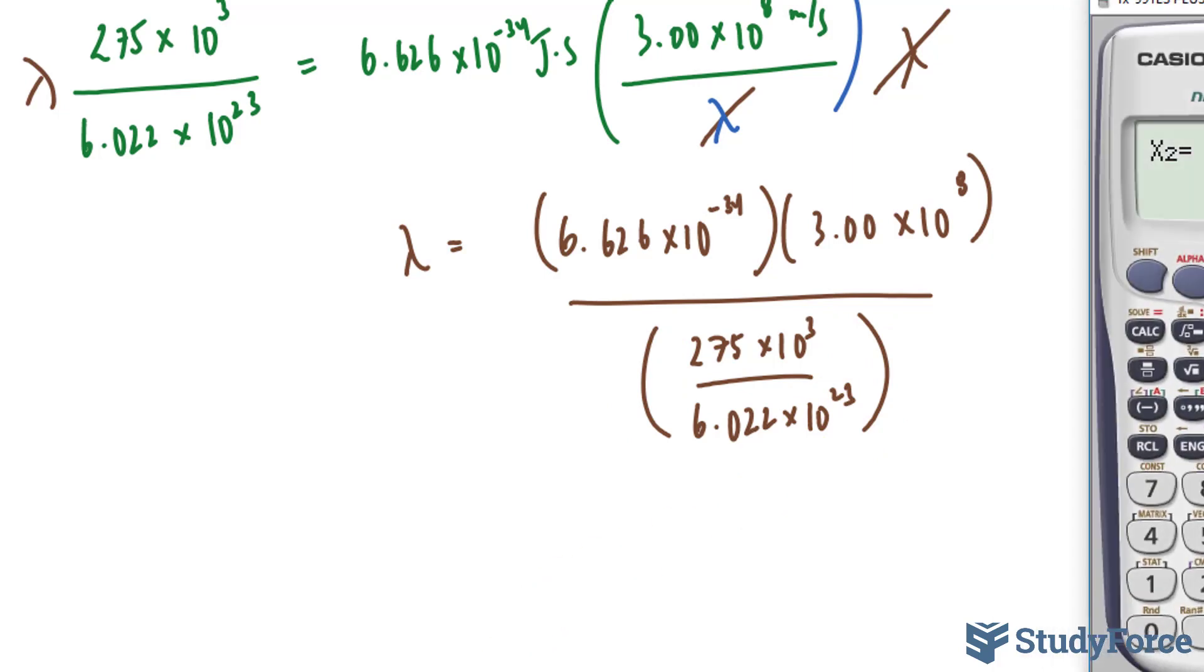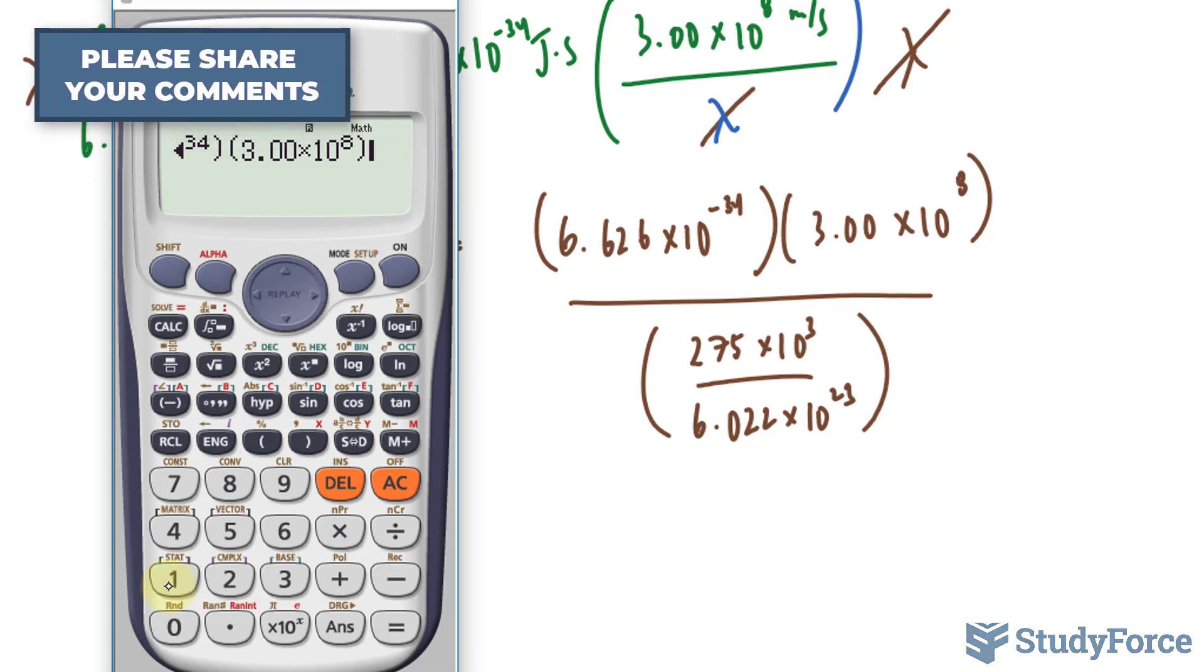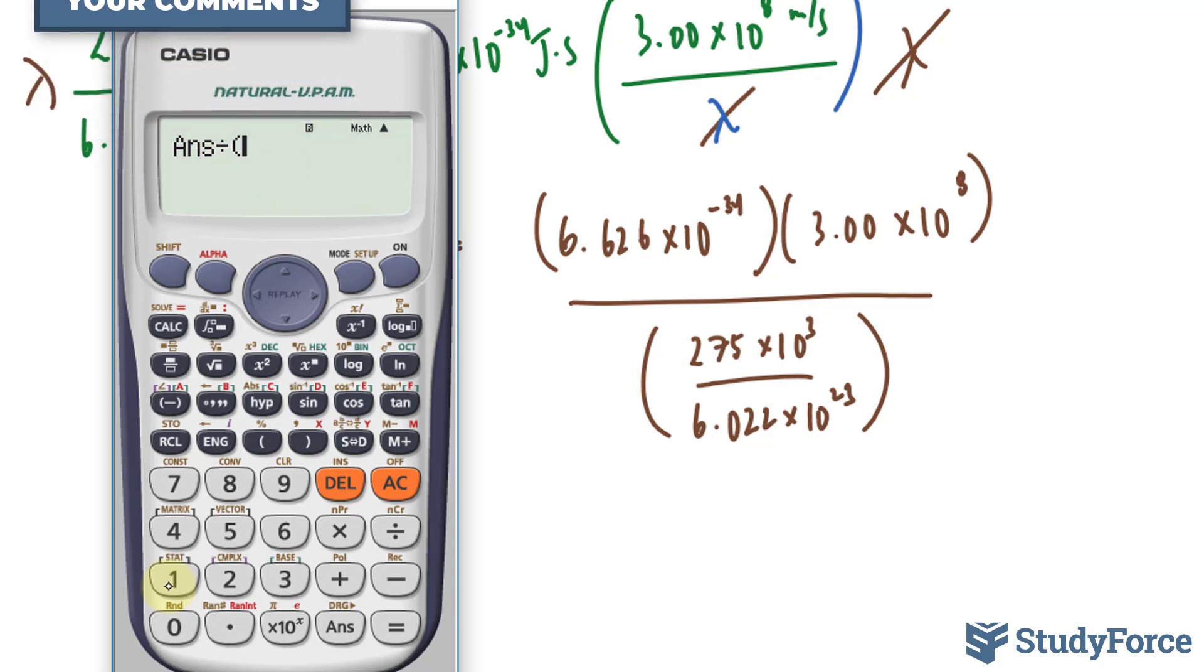Let's use our calculator, and our answer should be three significant figures. Starting with the top, 6.626 times 10 to the power of negative 34 times 3.00 times 10 to the power of 8 divided by the quotient underneath. The answer I get is in meters.